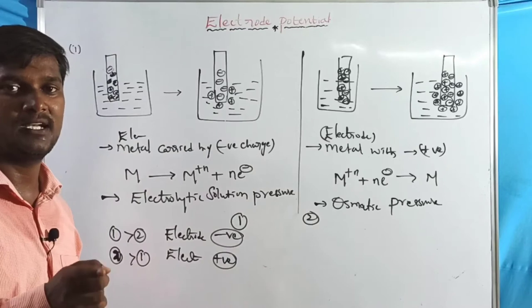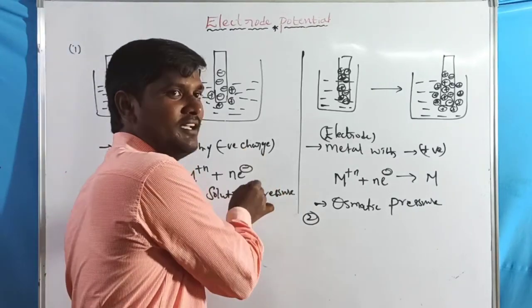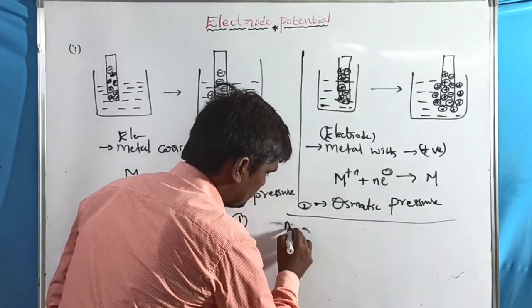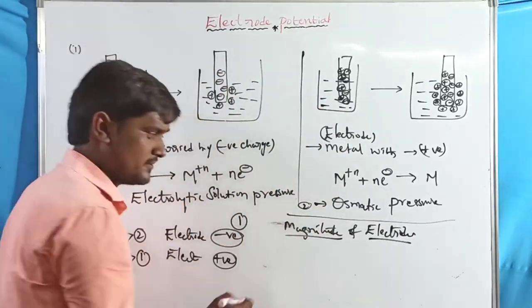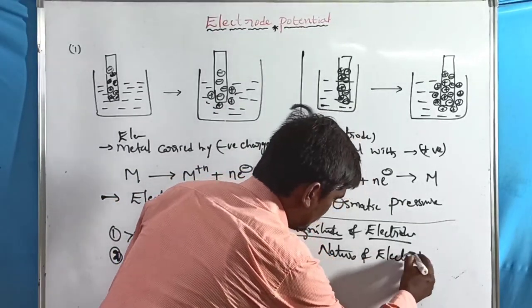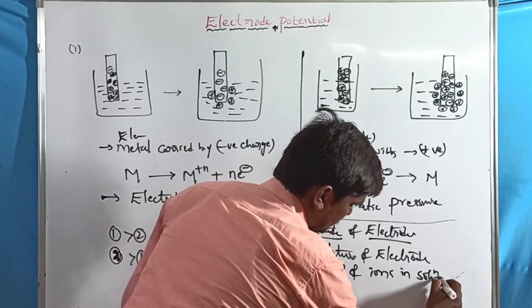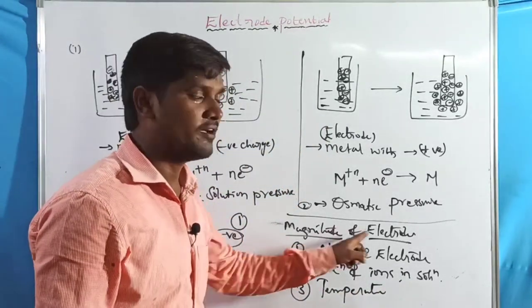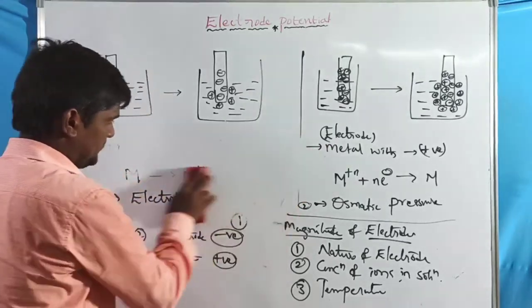The magnitude of electrode potential is measured with the help of losing or gaining of electrons. The magnitude of electrode potential is influenced by three factors: first, the nature of the electrode; second, the concentration of ions in solution; and third, temperature. These three factors influence the magnitude of the electrode potential.